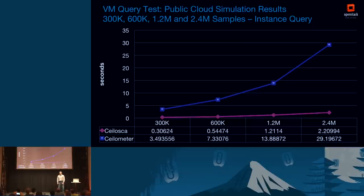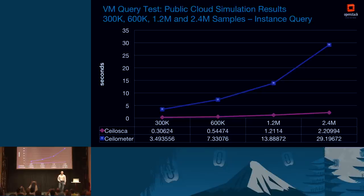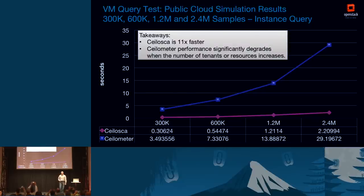We then ran the same query test for the public cloud scenario. The difference was even more significant. The more tenants you have, the worse CEILOMETER performance becomes. SILOSCA, by contrast, doesn't degrade as badly and maintains more linear behavior. The performance was astonishing — it was 11 times faster than CEILOMETER. We definitively found a strong correlation between CEILOMETER performance and the number of tenants in your cloud.